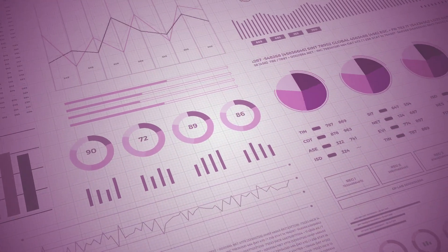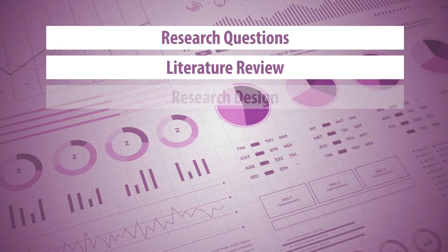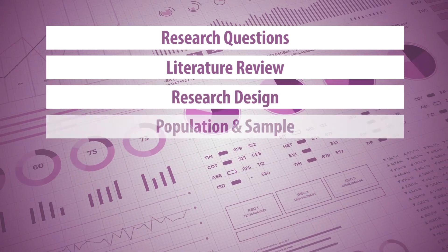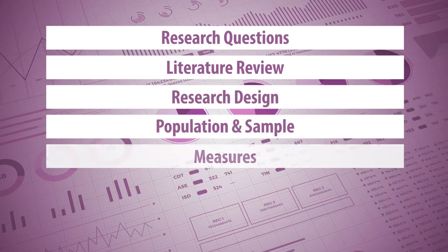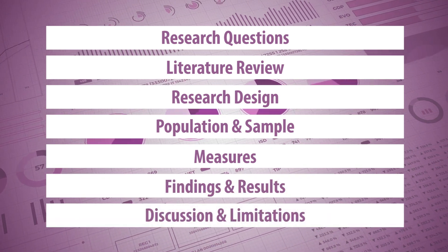The seven components are research questions, literature review, the research design, the population and sample, measures, the findings and results, and the discussion and limitations.